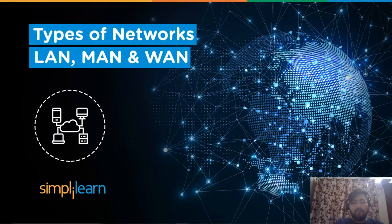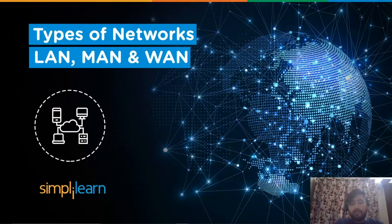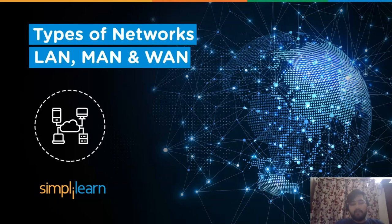Computer networks are often differentiated based on the mode of connection, like wired or wireless. They are categorized into different types depending upon the requirement of the network channel — for example, on the basis of geographical location and the data to be transmitted.